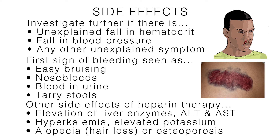There is also a decrease in blood platelets. Other side effects of heparin therapy include elevation of liver enzymes — the ALT and AST — which occurs in 80 percent of patients, and hyperkalemia, or elevated potassium, in 5 to 10 percent of patients. More rarely, alopecia, or hair loss, or osteoporosis may also be a side effect.